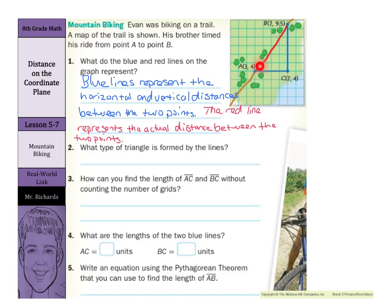What type of triangle is formed by the lines? Well, it looks like we have a 90 degree angle right here. So I would say that a right triangle is formed.